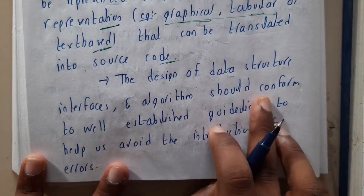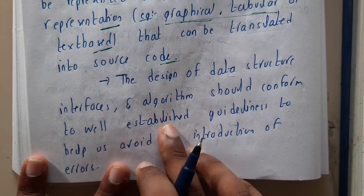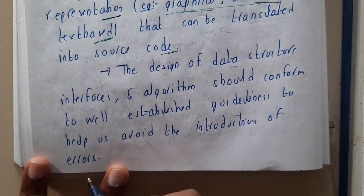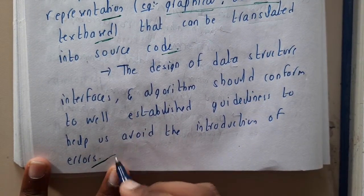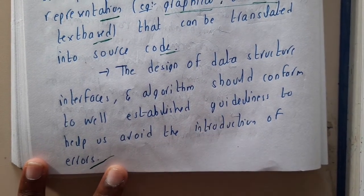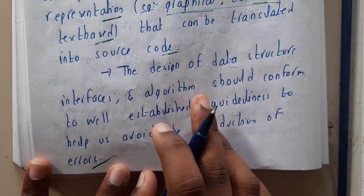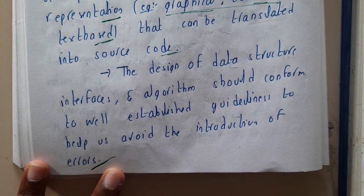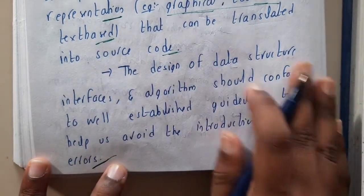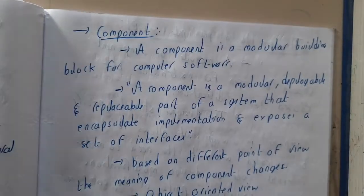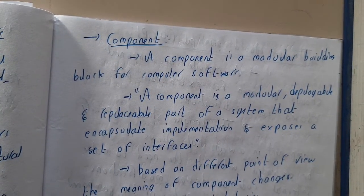The design of data structures, interfaces, and algorithms should conform to well-established guidelines to help avoid the introduction of errors. Basically, if the component level design is done 100% perfectly, basic structural errors and bugs will not even exist if you follow the proper methods in component level design.